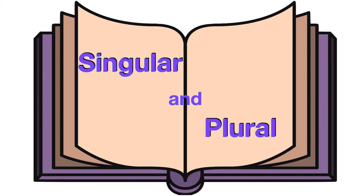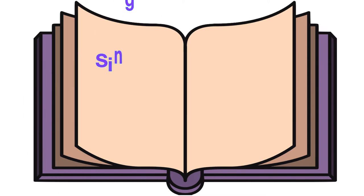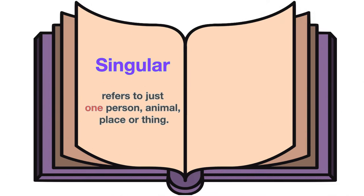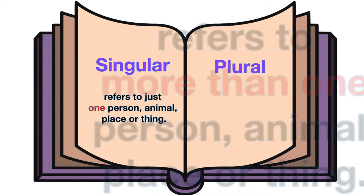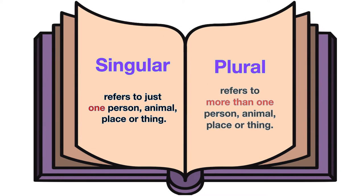Singular and plural. Singular refers to just one person, animal, place or thing. Plural refers to more than one person, animal, place or thing.